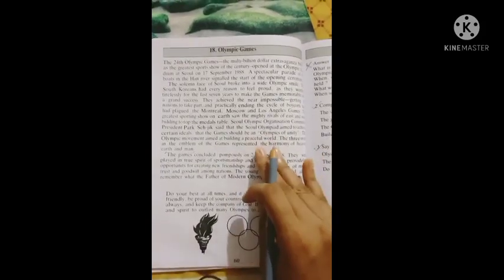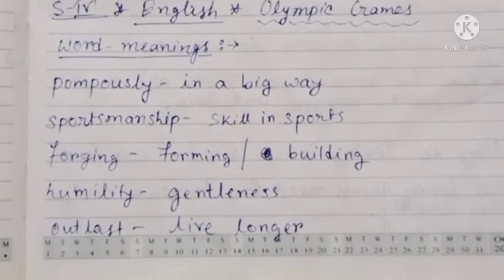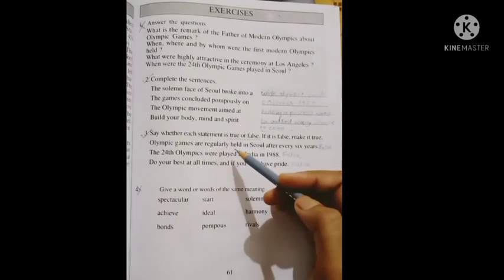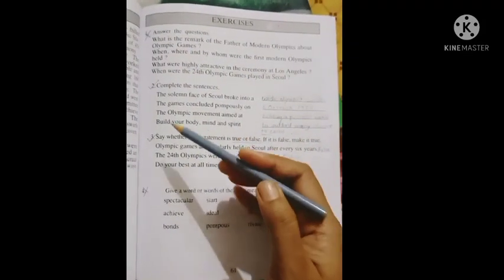So students, read this portion. Look, I have written the words meaning here, so follow this. Now come to this page exercise. Cross question number one and four. We will learn only question number two and three from this exercise.